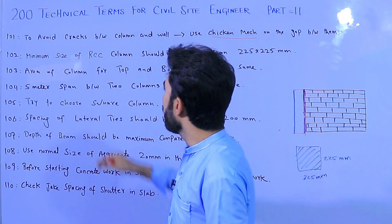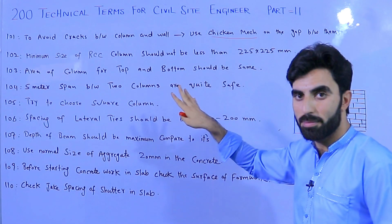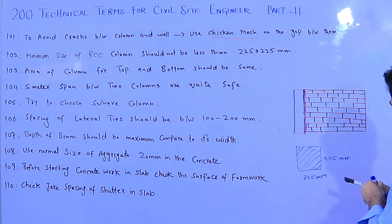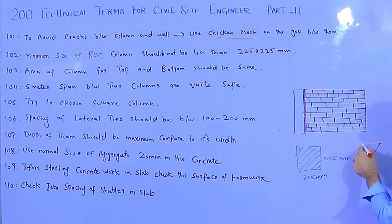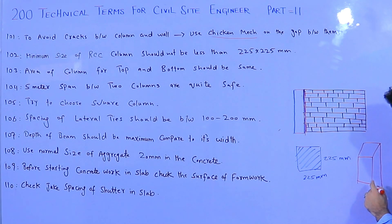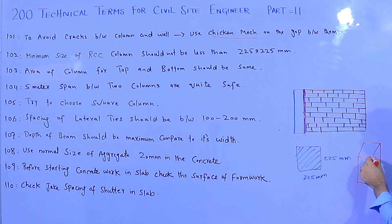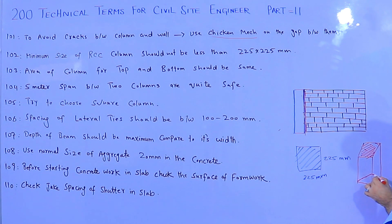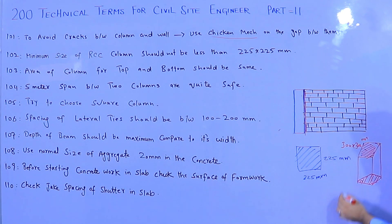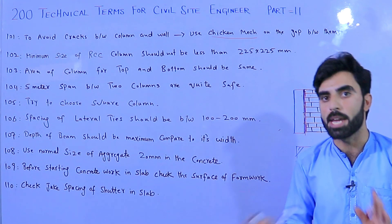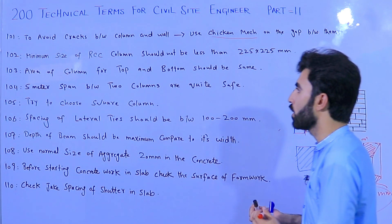Term 103: The area of the column at the top and bottom should be the same. It doesn't mean the top can be 300×300mm and the bottom 225×225mm — that is wrong, it's a mistake. The top and bottom area of the column should be the same in any structure or building.